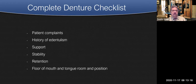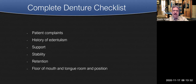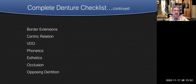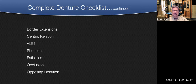For the complete denture checklist: hear patient complaints, review history of dentulism, evaluate support and stability of existing dentures — were they retentive? Look at the floor of the mouth and tongue position on a lower denture, as that's a common problem area. A tongue that's too large may push the denture out, causing biting of tongue or cheeks. We should also look at anatomical landmarks, border extensions, centric relation, VDO, phonetics, aesthetics, occlusion, and the opposing dentition. This checklist is critical and I don't see it applied often enough.